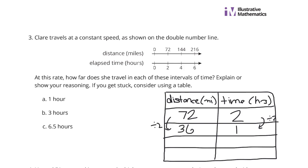And once I'm in that 1 hour, I can multiply by 3 to get to 3 hours, and multiply 36 by 3 to get to 108 miles.